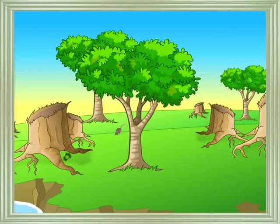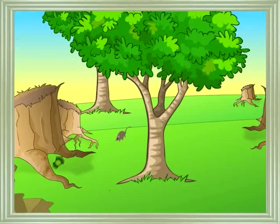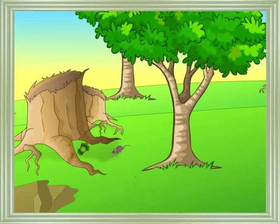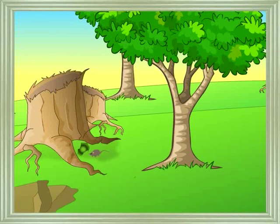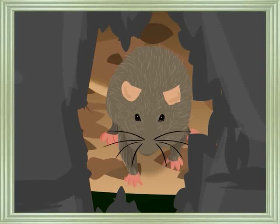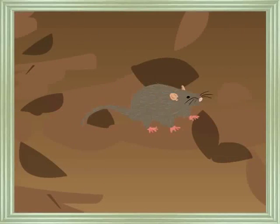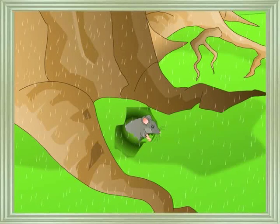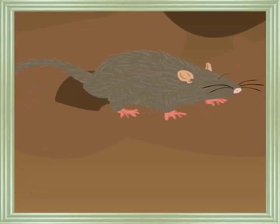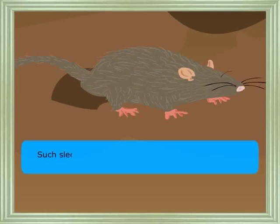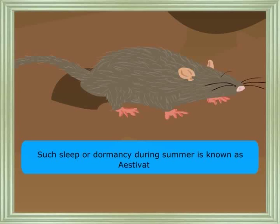During very hot seasons, animals burrow into deeper layers of mud and metabolic activity reduces; they remain dormant until conditions are favorable. Such sleep or dormancy during summer is known as aestivation.